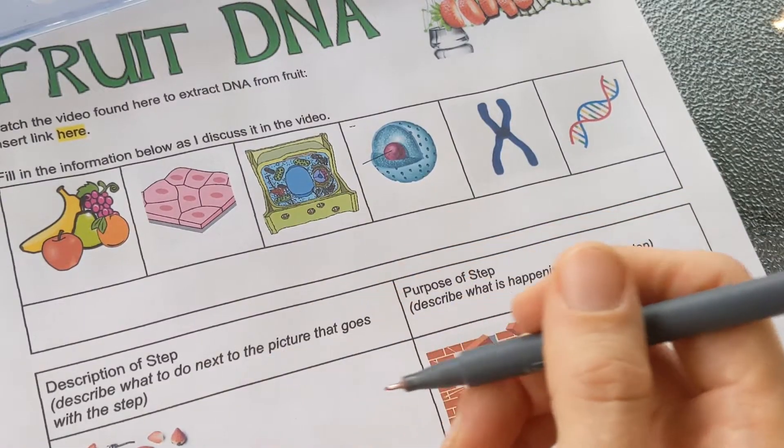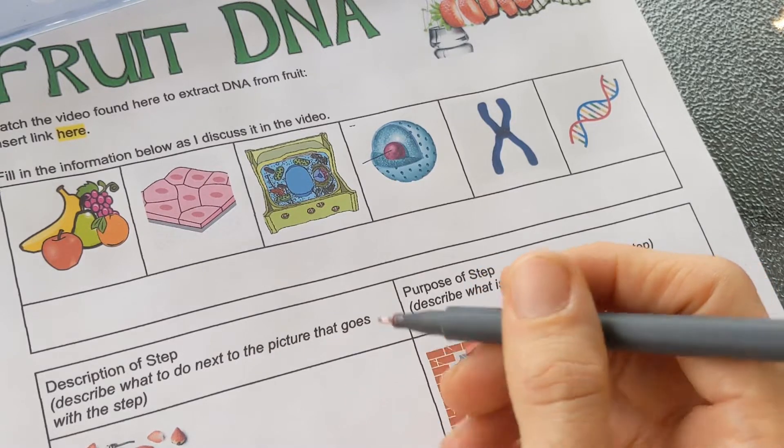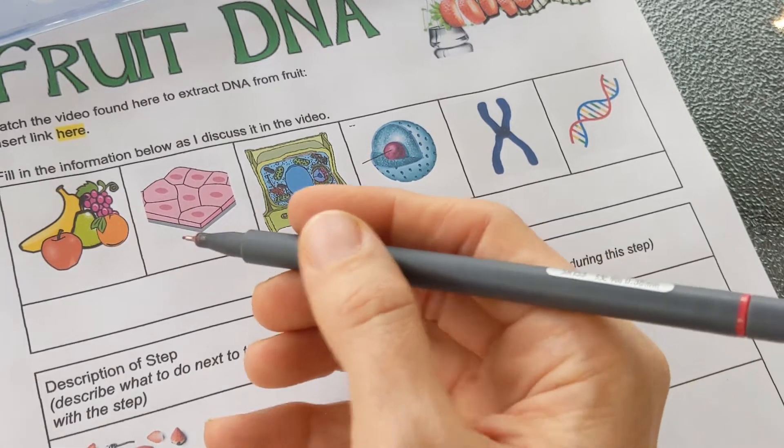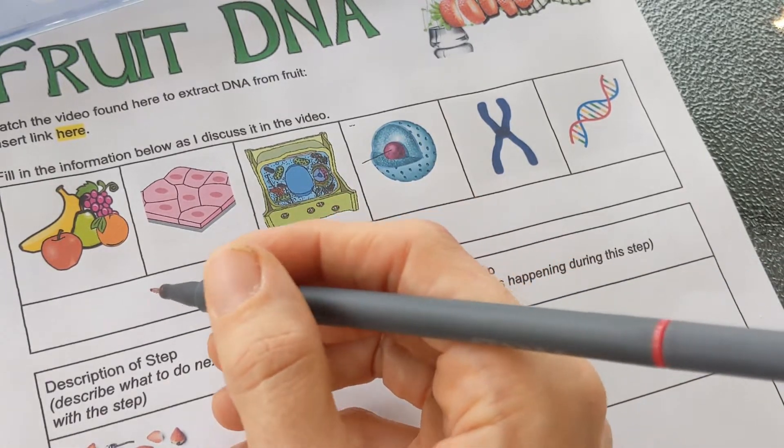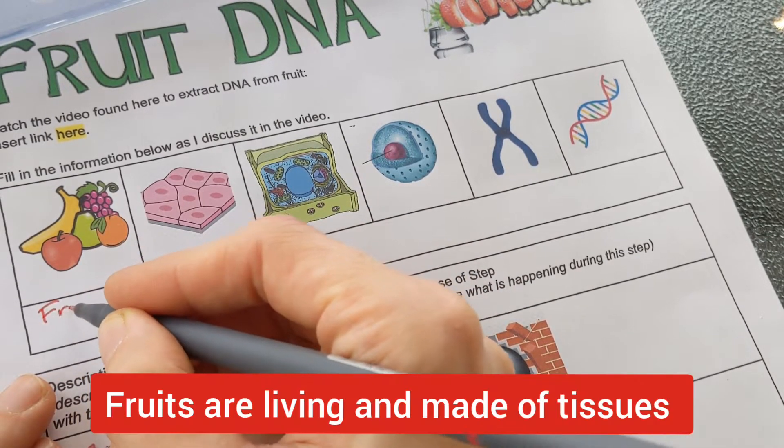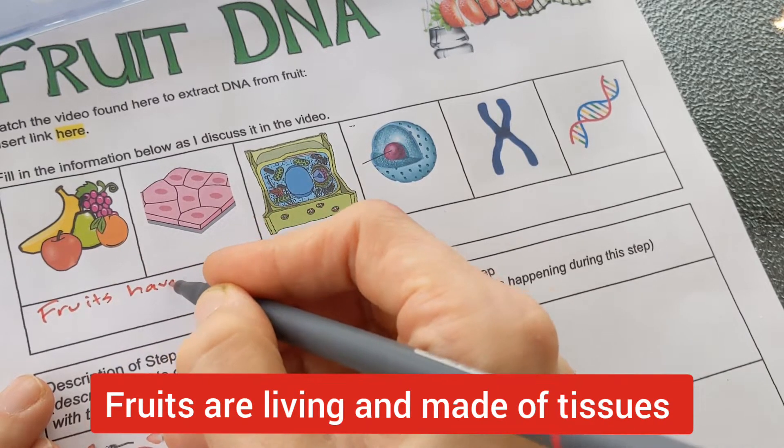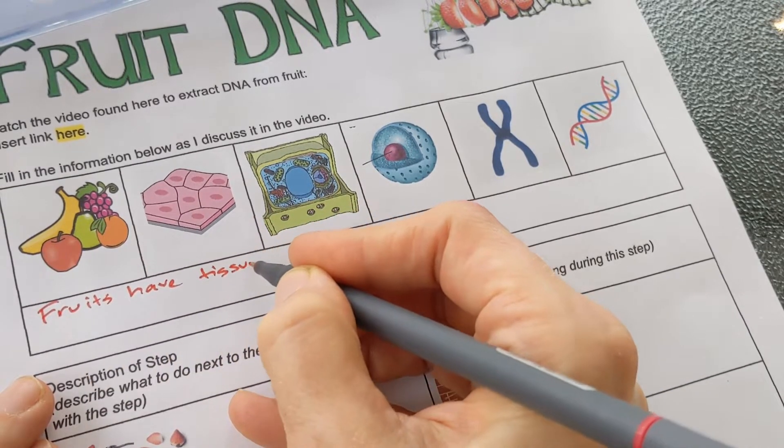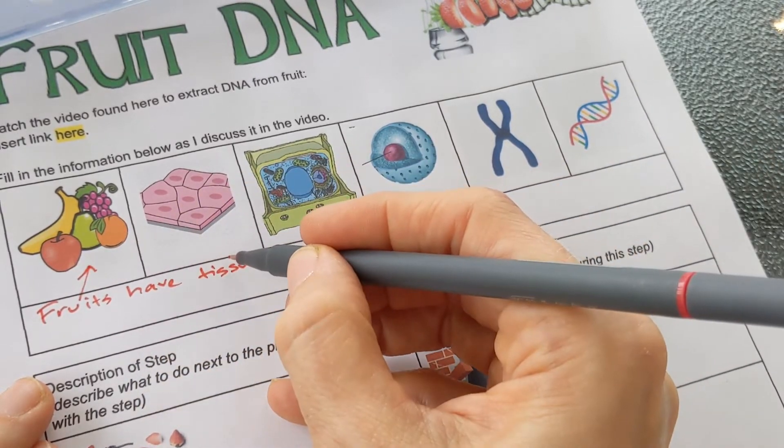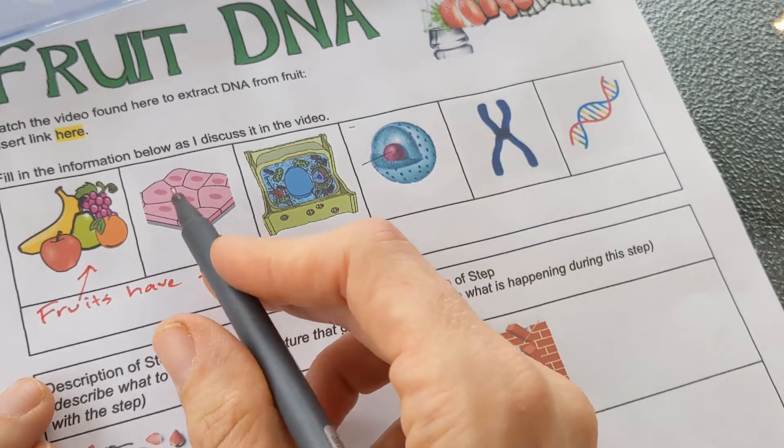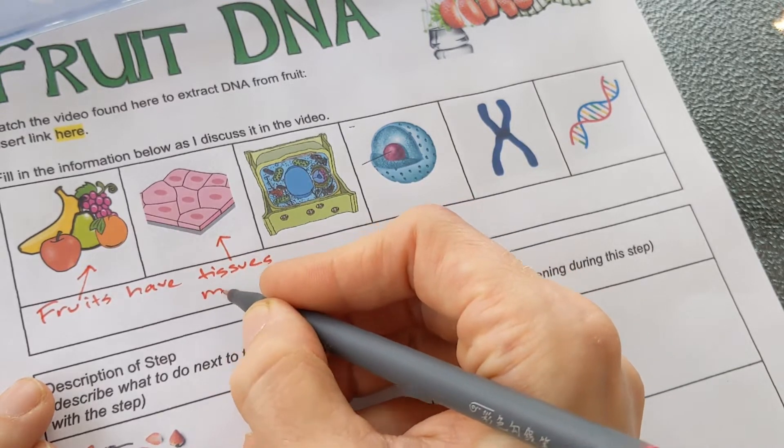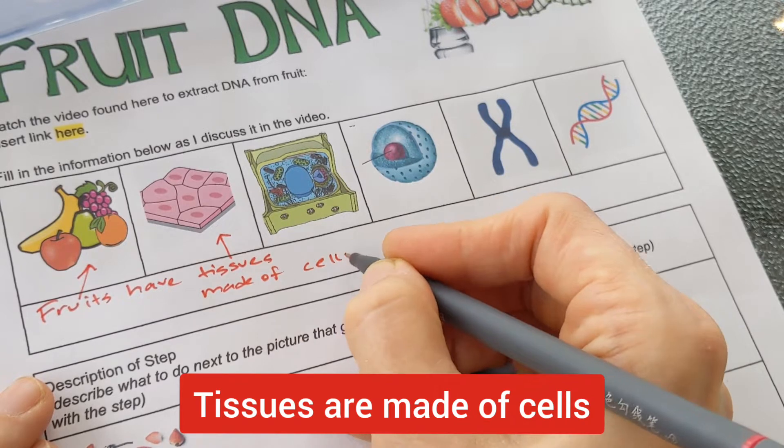So before we extract the DNA, it's important to understand the process of what we're doing. You could do this on your own cells just as easily, but it's very easy to do from fruit because you can just smash it up and you can't really do that with your own cells. So I like to start with fruit DNA. So all fruits are living and they have tissues. And these pictures represent these things. So I'm going to draw a little arrow. That's my fruits. And then this is a picture of tissues. And you can see these little individual things inside the tissues. You might have already guessed what those are. They are cells.